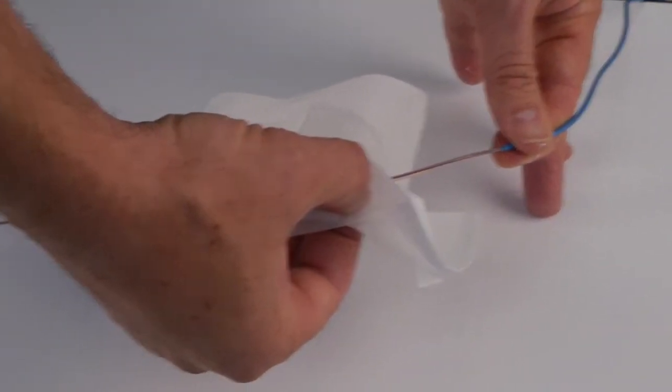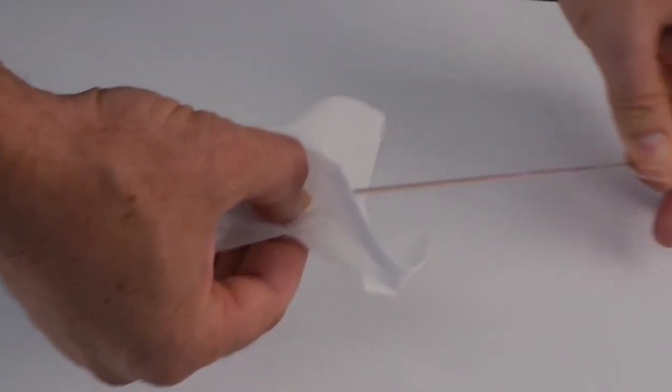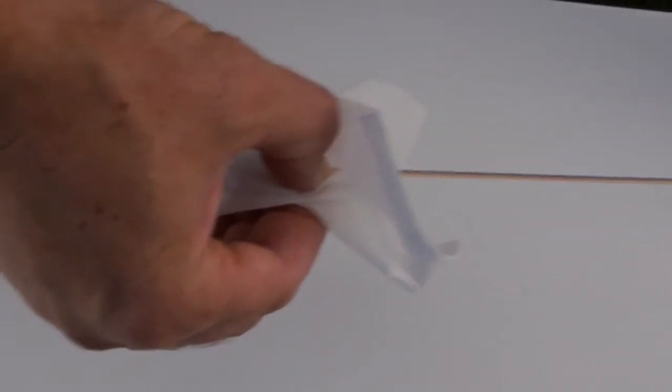Use dry lint-free wipes to remove the buffer tube gel from the exposed fibers. Begin near the buffer tube and work towards the fiber ends.